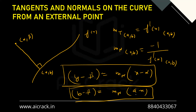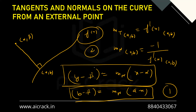To solve for two unknowns a and b, we need a second equation. Since (a, b) lies on the curve f(x), substituting it into f(x) gives the second equation. Solving these two equations together yields the values of a and b.